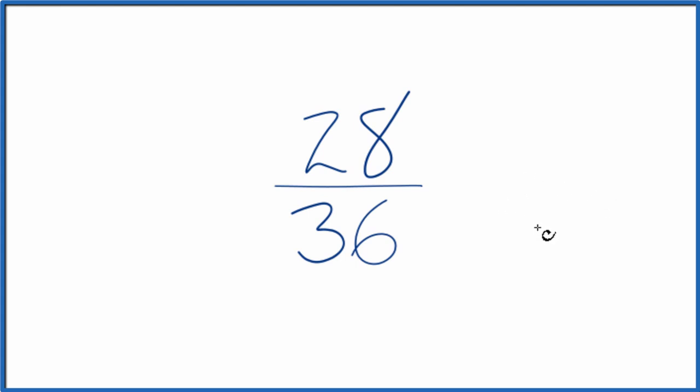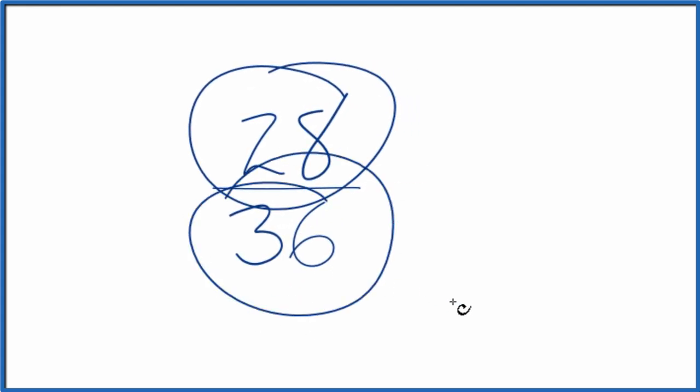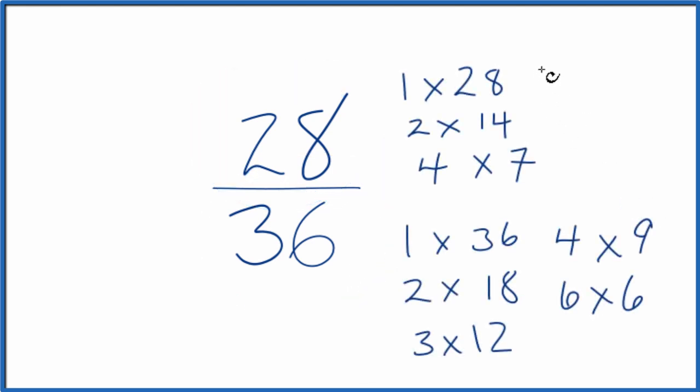To do that we need to find a common factor, something that goes into 28 and 36 evenly. So let's write the factors for 28 and 36. So these are the factors for 28 and for 36.